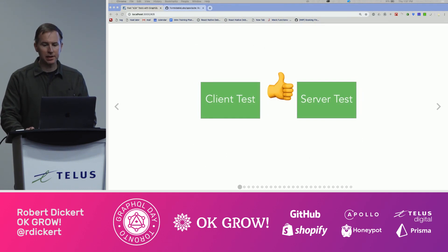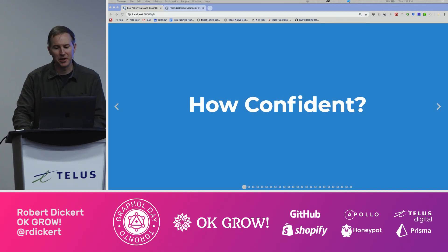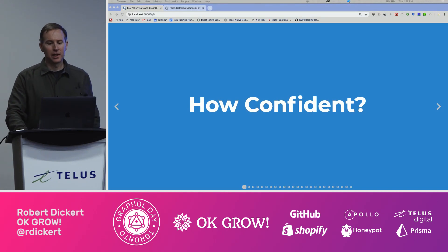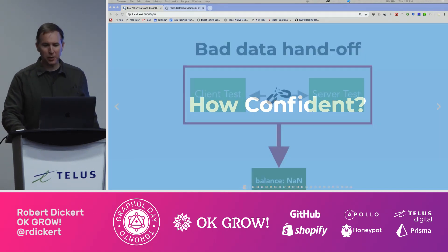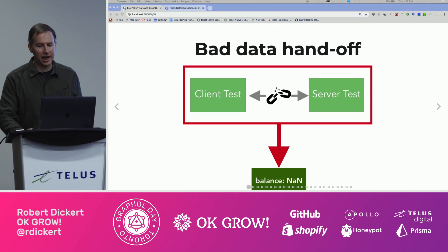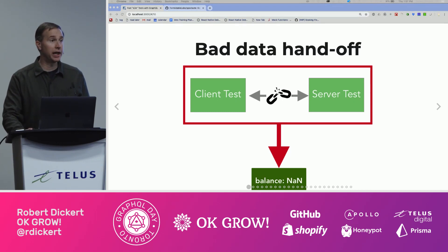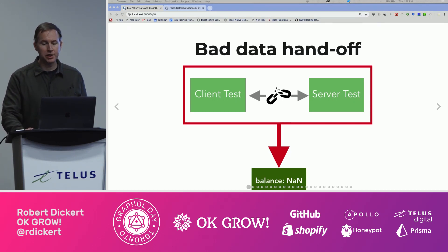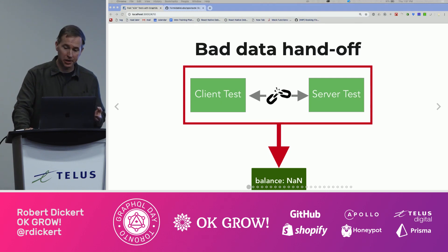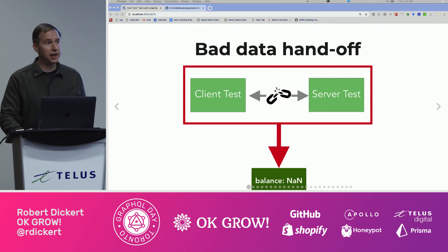So let's say we write client and server tests and get them to pass — how confident are you? Are you happy with these tests? What happens if both tests are okay but there's a problem with how the client and the server hand off between each other? In this case, your individual tests are green but the end-to-end scenario is broken.